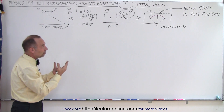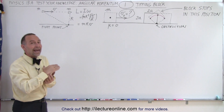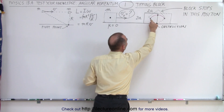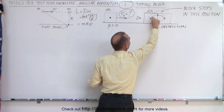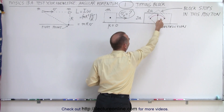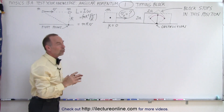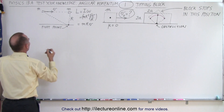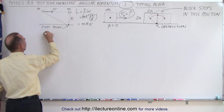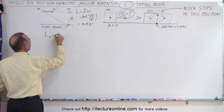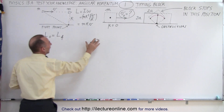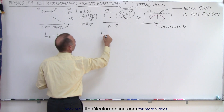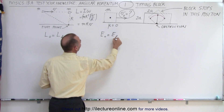In the conservation of momentum we have to use angular momentum because the block will then rotate — the center of mass will rotate along a circular arc. So we have to use conservation of angular momentum. The first part of the problem will be L_initial equals L_final, and for the second part we use energy_initial equals energy_final.